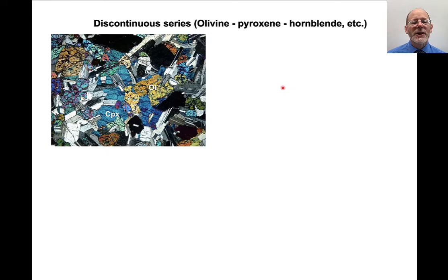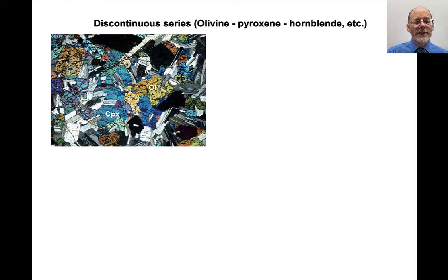For the discontinuous series, we see this in terms of textures. Here, for example, is a rock that contains olivine, clinopyroxene, and plagioclase. The olivine forms isolated crystals and clinopyroxene grows around it. This tells us we are going from a system that was precipitating olivine to one that was precipitating clinopyroxene — that's going down the discontinuous side of Bowen's Reaction Series.